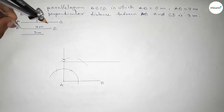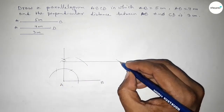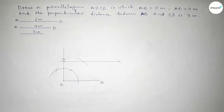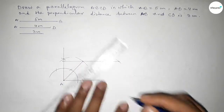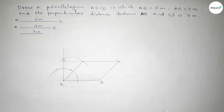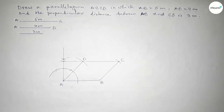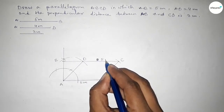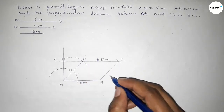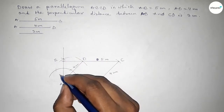Taking the length 4 centimeter and putting the compass here, cutting again so both lines intersect at a point. Joining this line, then joining this line, and taking point C here, point D here, and point E here. Therefore AB equals 5 centimeter and the opposite side is also equal to 5 centimeter, AD equals 4 centimeter, the opposite side is also 4 centimeter, and the perpendicular distance is 3 centimeter.